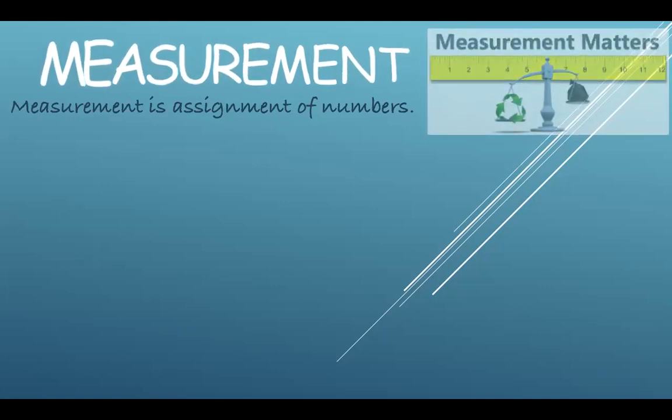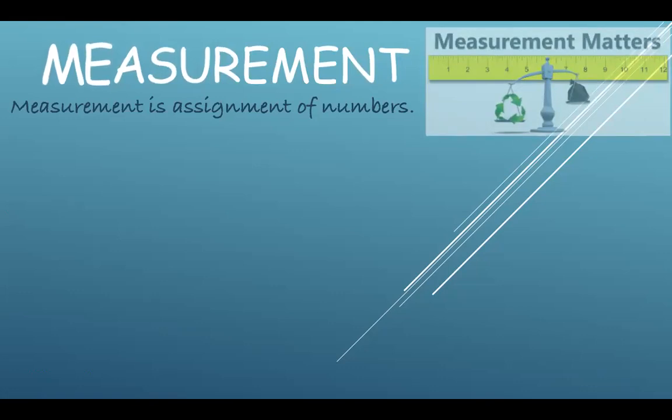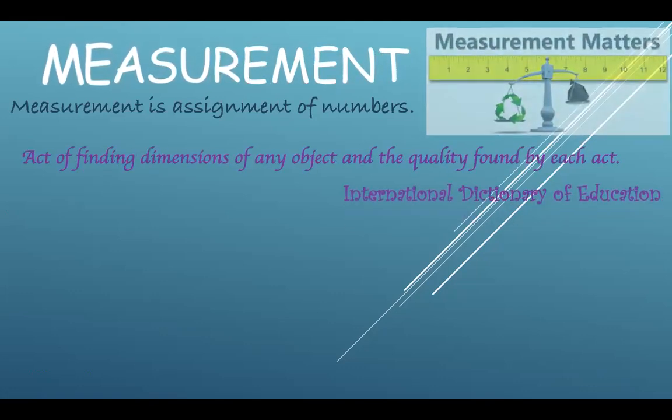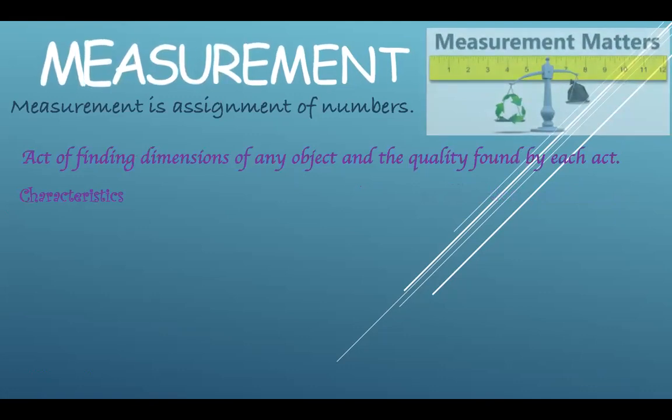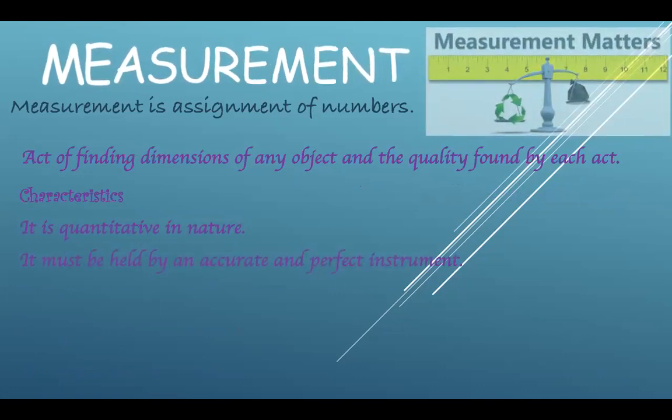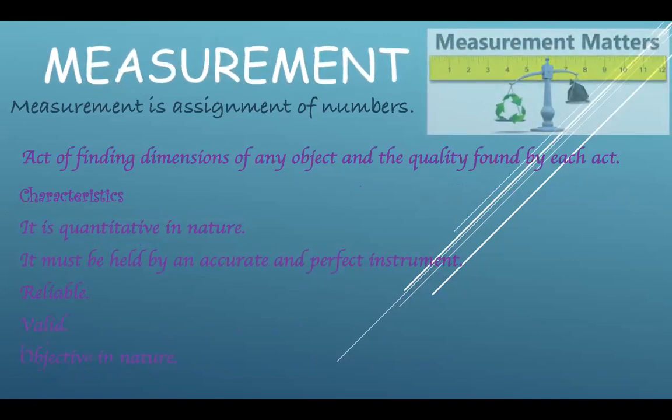As I have already told you in previous lecture, measurement has the range of tools, tests, or rating scales. The act of finding dimensions of any object and the quality found by each act is the measurement, as it has been written in the International Dictionary of Education. There are some characteristics of measurement also. Measurement is quantitative in nature. Measurement must be held by an accurate and perfect instrument. It must be reliable also, it must be valid also, and it must be objective in nature also.